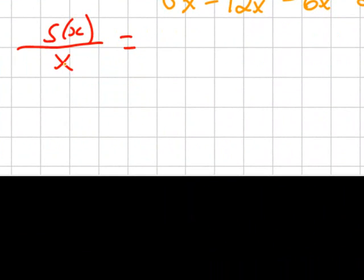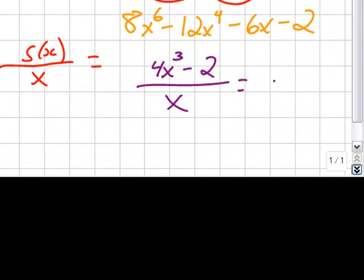Now finding the quotient, I simply take that polynomial, and I'm going to divide it by x. That looks like this. And after dividing through, I end up with 4x squared minus 2 over x.